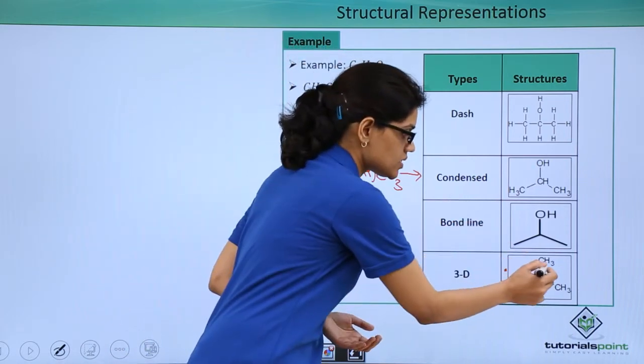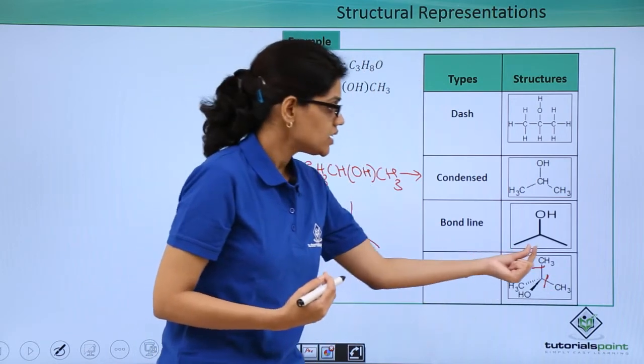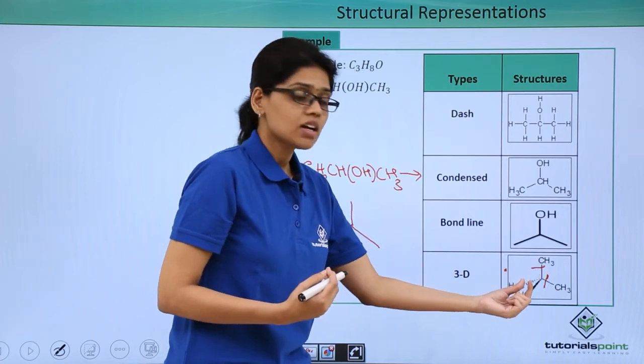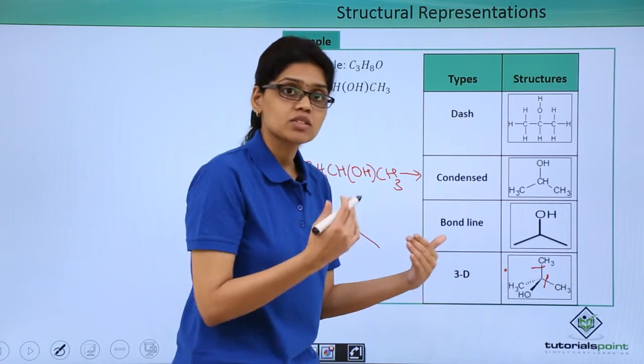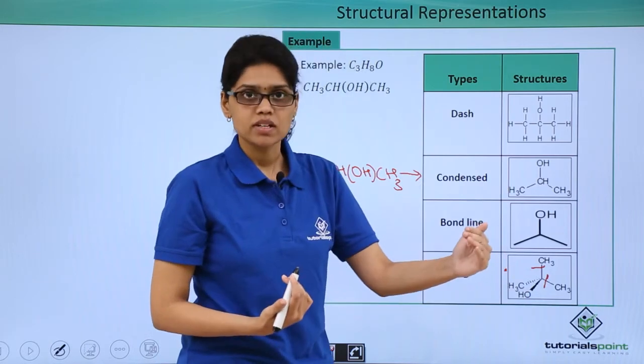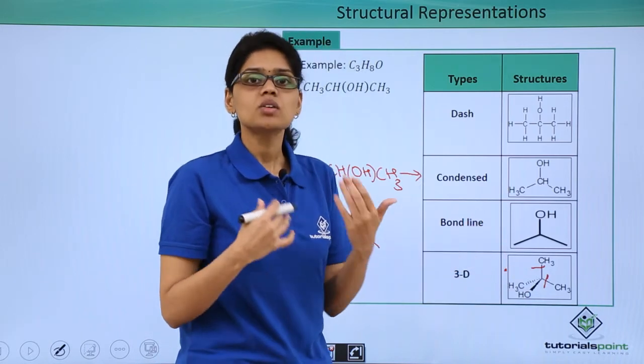If you look at this representation, you have to assume that these two bonds are actually lying on the plane, and the dash wedge is actually going behind the plane, and the solid wedge is actually coming towards the plane or outside the plane or towards the viewer.